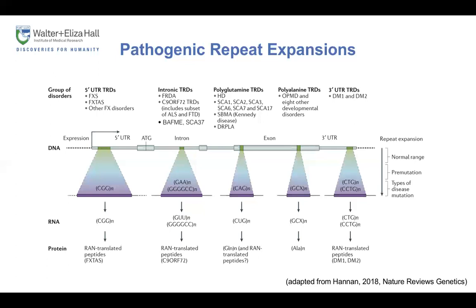The underlying biological mechanisms for repeat expansion disorders are very interesting. This figure is from a review paper by Tony Hannan in Nature Reviews Genetics. There are different groups of repeat expansion disorders based on the genic location of the repeat and the specific repeat motif, and these have different consequences at the DNA, RNA, and protein levels. For example, polyglutamine expansions from CAG repeats are typically degenerative, whereas polyalanine disorders, though biochemically similar, do not appear to be progressive and are mostly associated with developmental disorders.